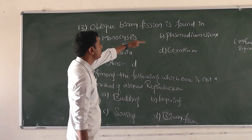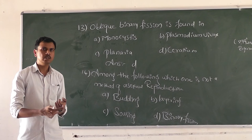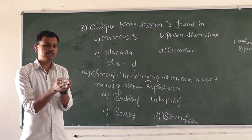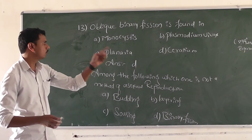Plasmodium vivax reproduces through multiple fission. There are two types: binary fission, where one organism separates into two organisms, and multiple fission, where more than two organisms are produced. That is what we call multiple fission.